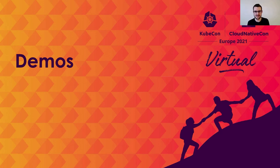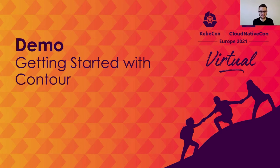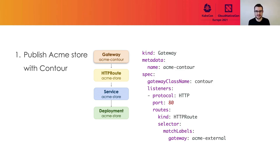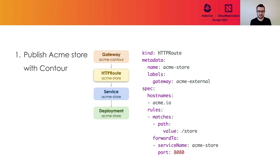We've made it to the demos section of this talk, and I get to highlight some of the great implementations that already support Gateway API. To get started, we're going to use Contour with a very simple example that looks similar to what we already showcased. We have an ACME Contour gateway and an ACME store HTTP route. The gateway is listening on port 80, supports HTTP routes, and will bind to any route that has the label gateway: ACME-external. The route matches requests to acme.io with the path /store, and forwards those requests to the ACME store service.